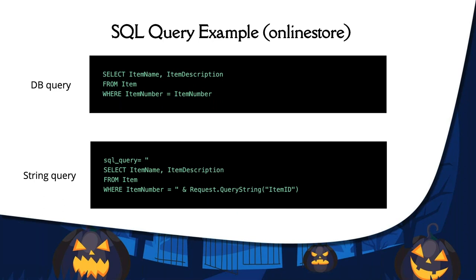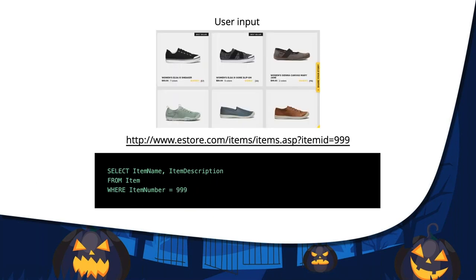The web application — your website front — builds a string query that is sent to the database as a single SQL statement. That string query pulls the data from the database and shows it to the user. For a clearer example, imagine the user wants to look at a cool black shoe. The user clicks it and generates a URL like HTTP://www.estorexyz with item ID 999. This generates an SQL query telling the database to give the item name and description for item number 999, which is then shown to the user.